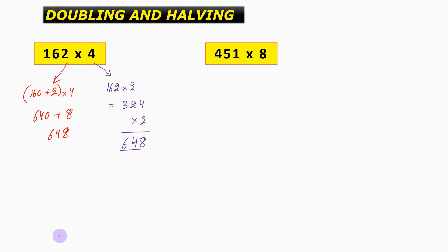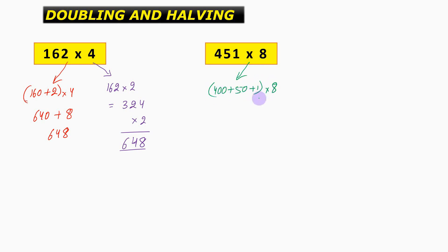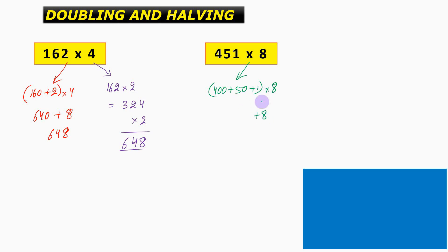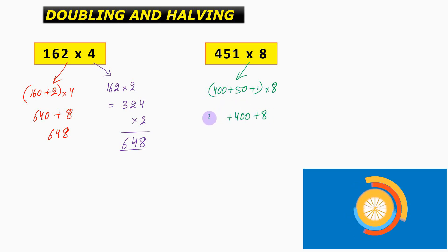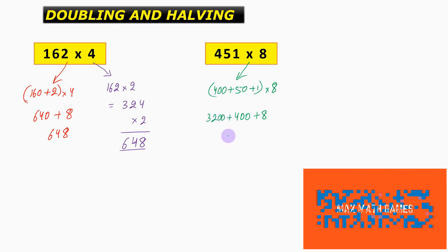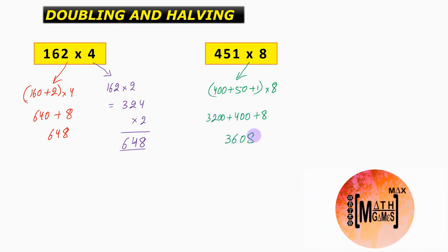Now 451 into 8 — this question can be solved by two methods. For the first method we are going to use calculation using splitting. We can write it as 400 plus 50 plus 1, into 8. So 1 into 8 is 8, 50 into 8 is 400, and 400 into 8 is 3200, thereby giving us the answer as 3608.